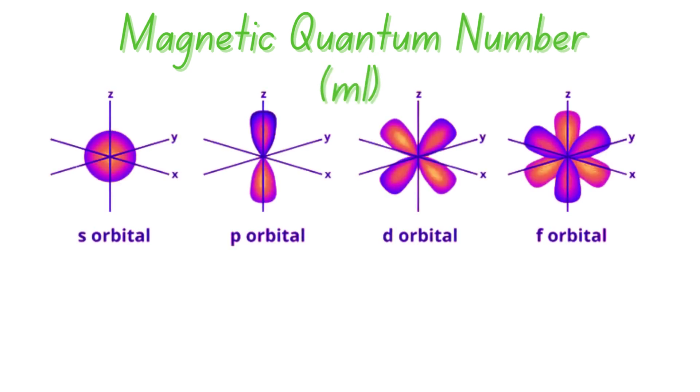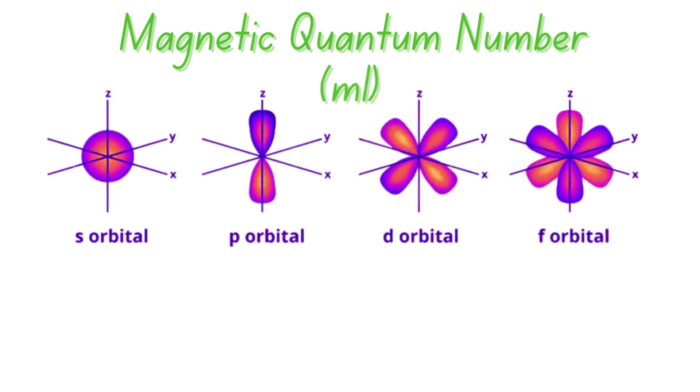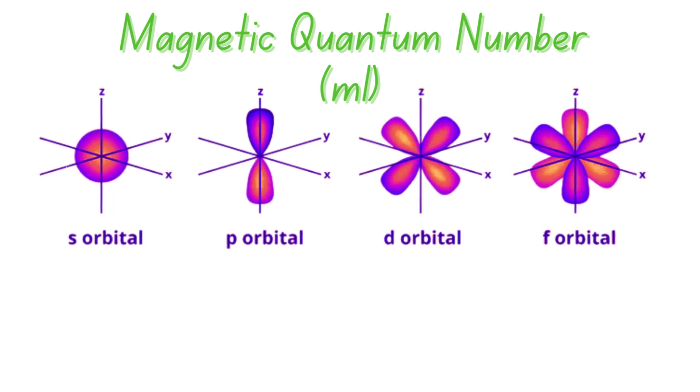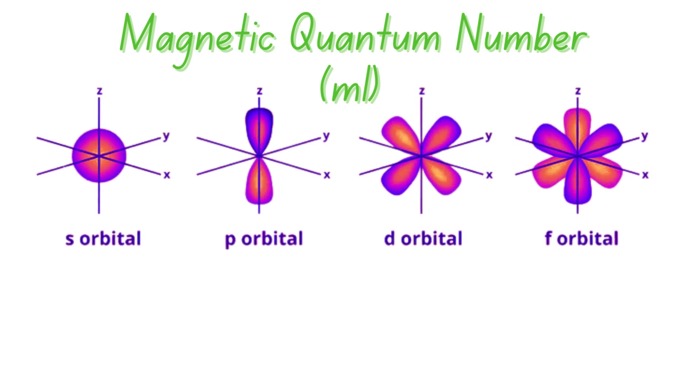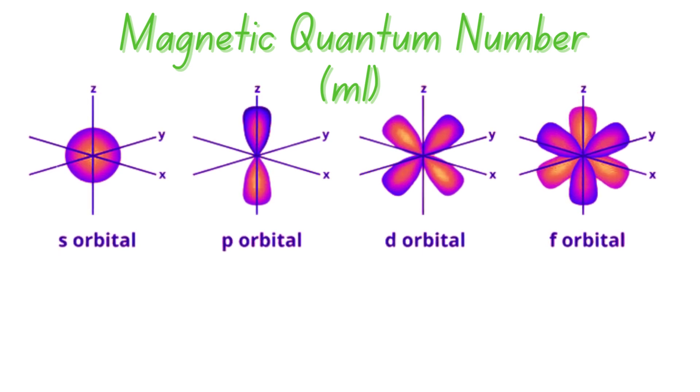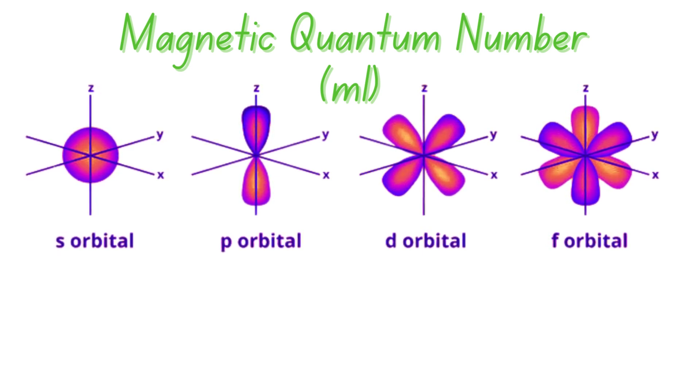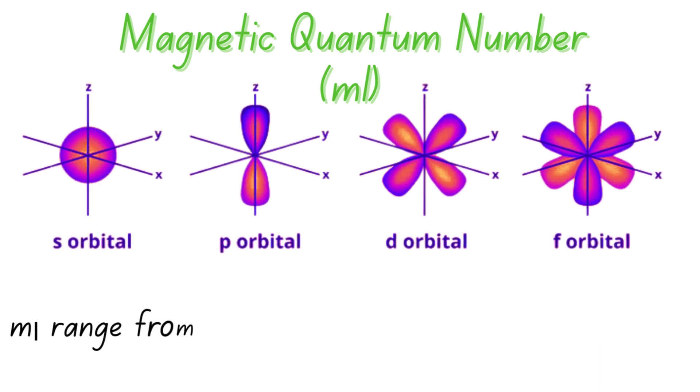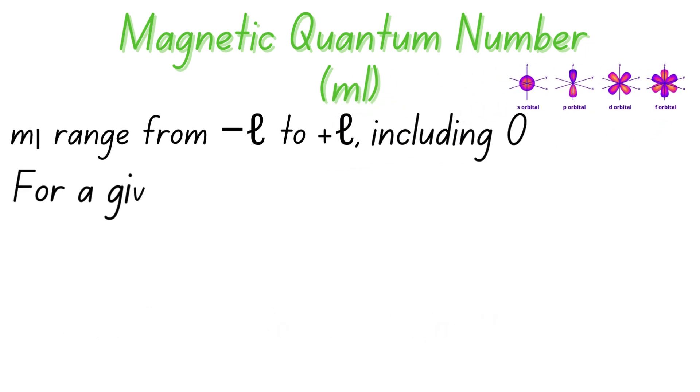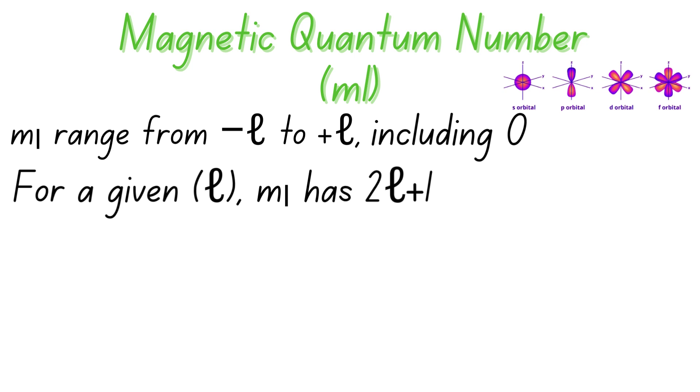The magnetic quantum number specifies the orientation of an orbital in space. It describes how the orbital is aligned relative to an external magnetic field or spatial direction. That is, it shows the number of orbitals in each sublevel. The possible values of ml range from minus l to positive l, including zero. For a given azimuthal quantum number l, ml has 2l plus one possible values.